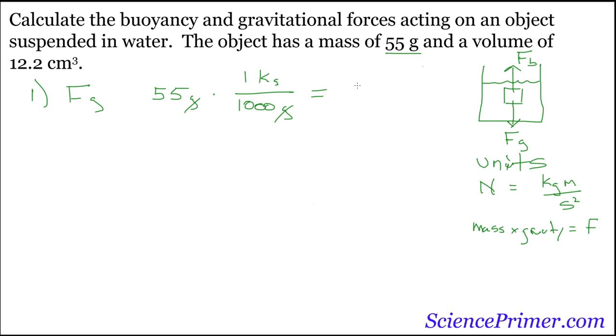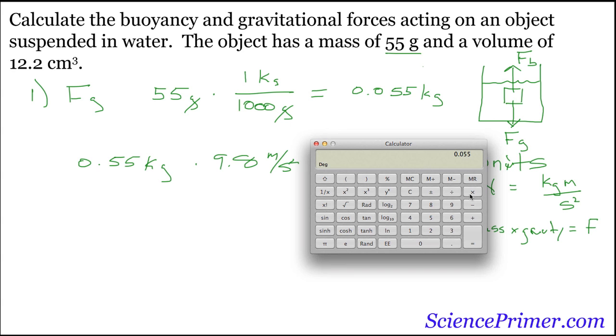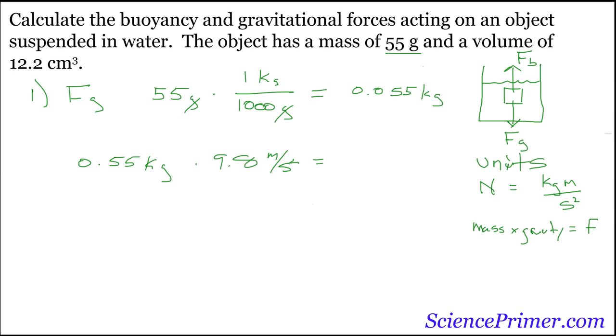So we have 0.055 kilograms. Now that we have the mass in kilograms, we can use this relationship. So 0.055 kilograms times 9.8 meters per second squared, the acceleration due to gravity, will give us force of gravity acting on this object. And so we have our 0.055, we'll just multiply that by 9.8, we'll get 0.54. So the force of gravity acting on this object is 0.54 kilograms meters per second squared, or Newtons.